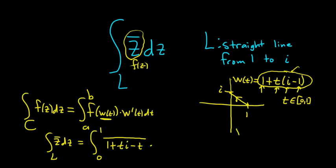What's the derivative? What's w prime? Well, w prime, the derivative of 1 is 0, and the derivative of t times i minus 1 is just i minus 1. So times i minus 1 dt, because the derivative of t is 1.